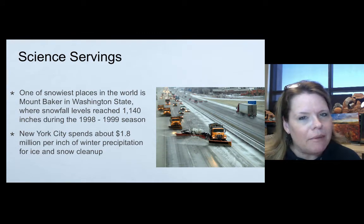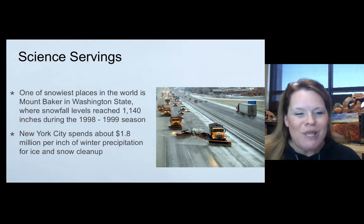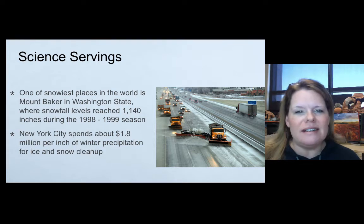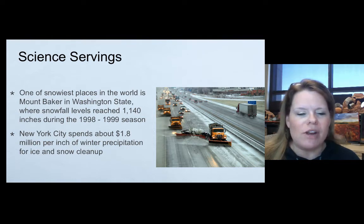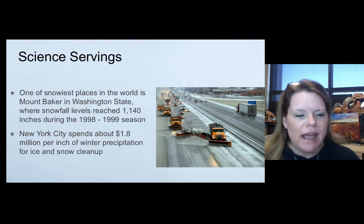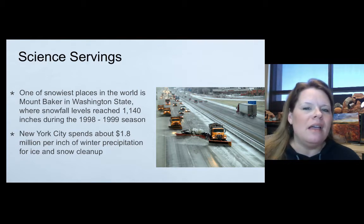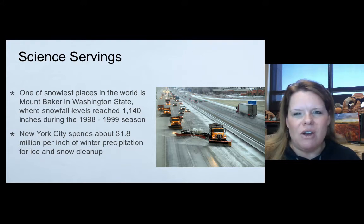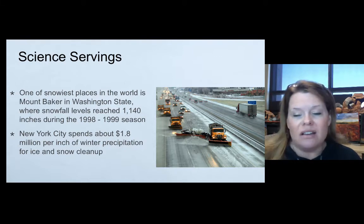One of the snowiest places in the world is Mount Baker in Washington State — snowfall levels reached 1,140 inches during the 1998 to 1999 season. New York City spends about 1.8 million dollars per inch of winter precipitation for ice and snow cleanup, requiring extensive around-the-clock services to keep the city operational.